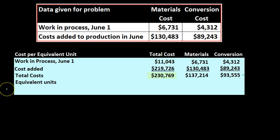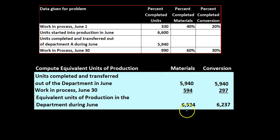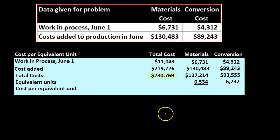We're going to bring in the equivalent units from our prior slide. For materials that is 6,534 equivalent units, and for conversion it is 6,237 equivalent units. So here we have our total costs broken out between materials and conversion in dollars, and now we'll apply these out per equivalent unit, which we will later use to apply out our costs.